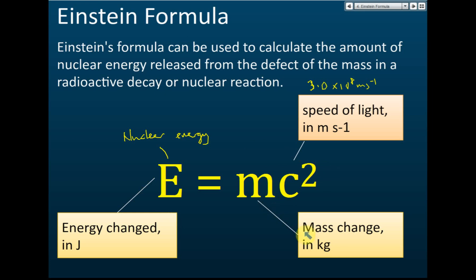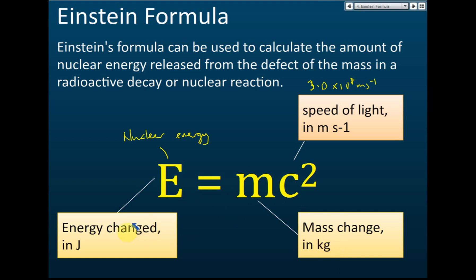They will give you the mass, but the mass must be in kg. Take note that the mass must be in kg and the speed of light must be in meters per second. Sometimes they may give you the mass in atomic mass units, AMU, denoted by the symbol u. If they give the units of mass in AMU, you must convert it to kg.